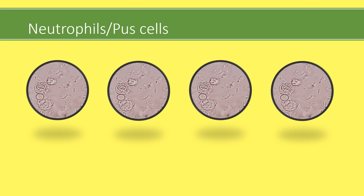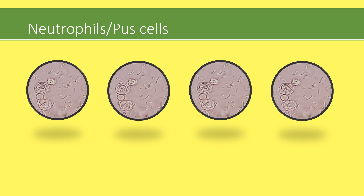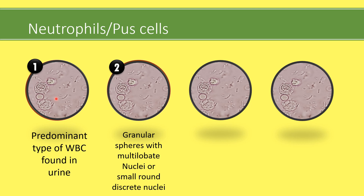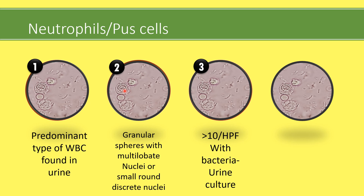Let's note a few points about neutrophils, also called pus cells. Neutrophils or pus cells are the predominant type of WBC found in urine. These have granules in the cytoplasm, so they are defined as granular spheres with multilobate nuclei or small round discrete nuclei. Greater than 10 neutrophils or pus cells per high power field with bacteria suggest that a urine culture should be done to check for infection.